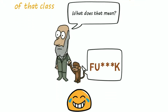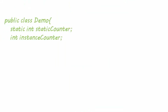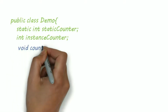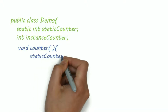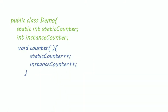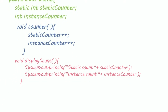Let's understand this by an example. Here I created a class demo with a static variable called static counter and an instance variable called instance counter. The method counter increments both variables by one, and the display count method simply displays the value in both variables.